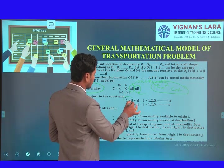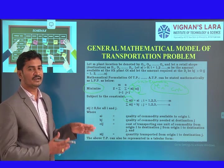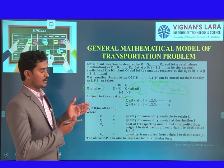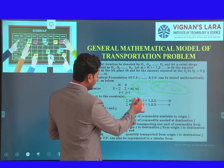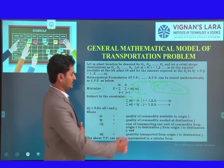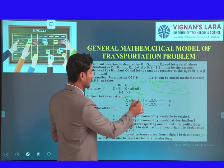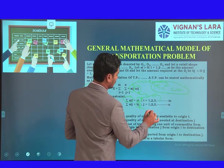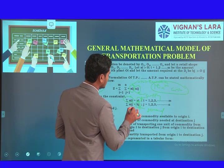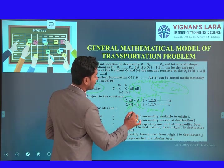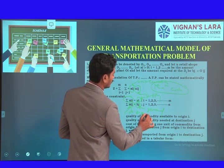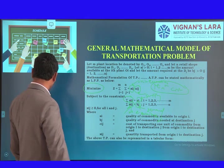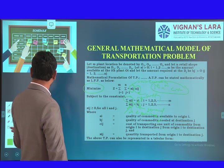Coming to the constraints: Xij is the quantity transported from origin to destination. Ai is the supply — the commodity availability at source i. Bj is the demand at destination j. Xij is the number of units transported. These supply and demand constraints form the standard form of the transportation problem.